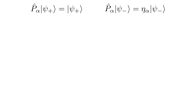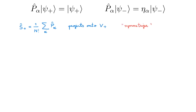To build totally symmetric and totally antisymmetric states, we define two new operators that project an arbitrary state onto the subspaces V-plus and V-minus. We define the operator S-plus as equal to 1 over N-factorial, summed over all N-factorial permutations alpha of P-alpha. S-plus projects onto V-plus, creating totally symmetric states, and we call it the symmetrizer. We also define S-minus as 1 over N-factorial, summed over alpha of eta-alpha times P-alpha. S-minus projects onto V-minus, creating totally antisymmetric states, and we call it the antisymmetrizer.